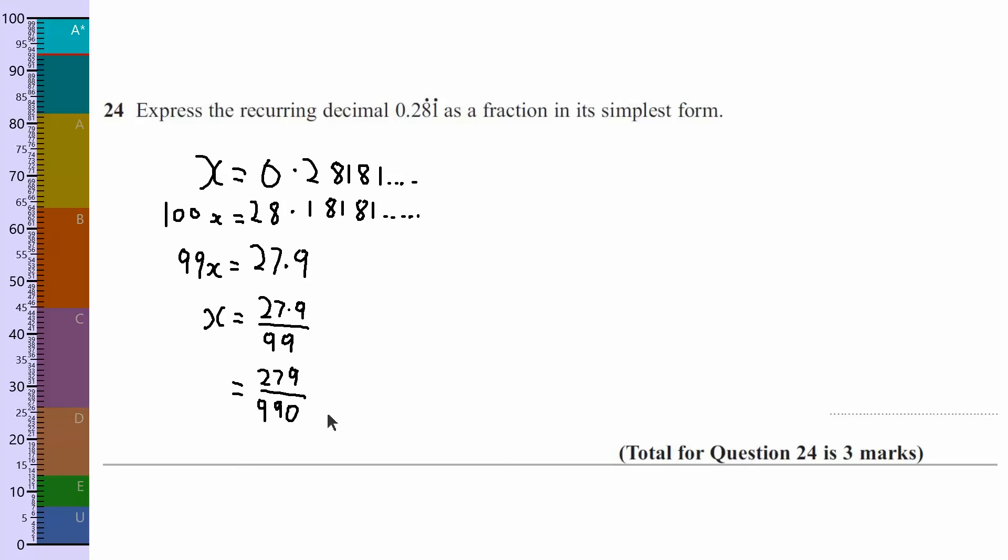And we want to try and find a way of cancelling these down, if we can. So looking at the top, I know I can divide this by 3, because 2 plus 7 plus 9 is 18. And whenever you get a multiple of 3, when you add up the individual digits, that number will be a multiple of 3. And I know 990 is as well, because that's also 18, when you add up the individual digits.